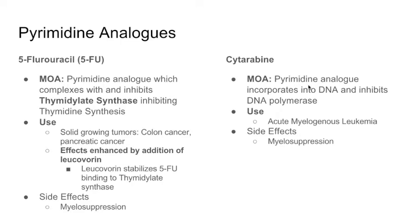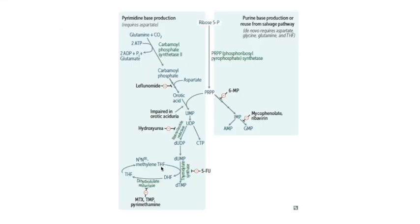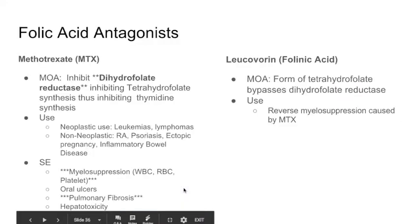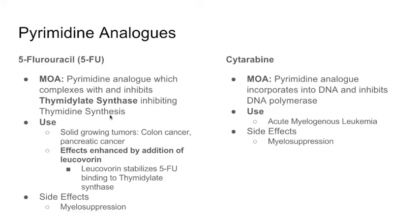We've covered purine analogs and folic acid antagonists. The last class of DNA synthesis inhibitors is pyrimidine analogs — drugs that act sneakily and mimic pyrimidines. The ones to focus on are 5-fluorouracil and cytarabine. 5-fluorouracil is a pyrimidine analog that complexes with and inhibits thymidylate synthase, blocking the conversion of dUMP to dTMP. If you remember that 5-FU inhibits thymidylate synthase, you've won half the battle.